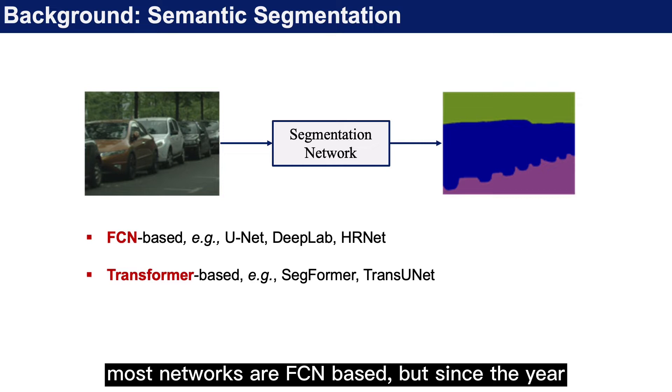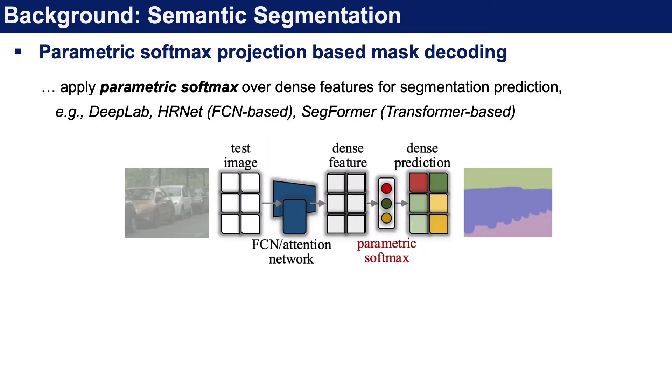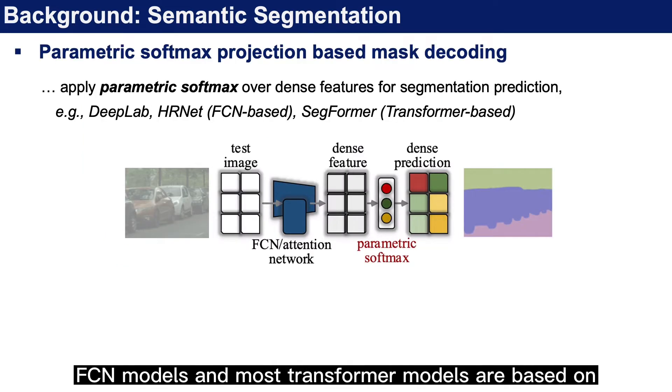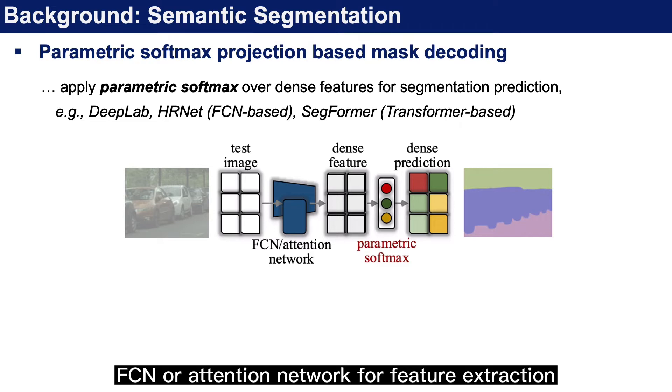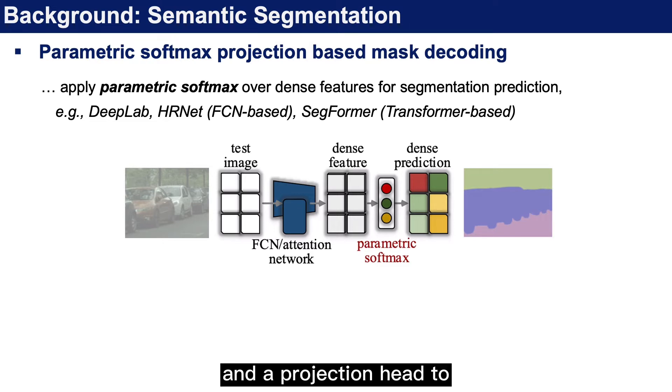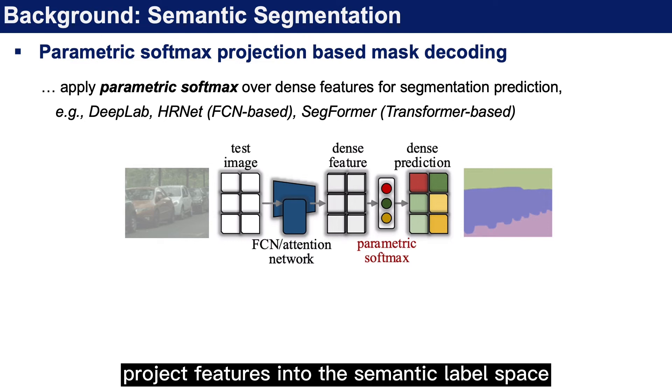Most networks are FCN-based, but since 2020, transformer-based models have become popular. Despite diverse model designs, almost all FCN models and most transformer models are based on parametric softmax projection. They include an FCN or attention network for feature extraction and a projection head to project features into the semantic label space.